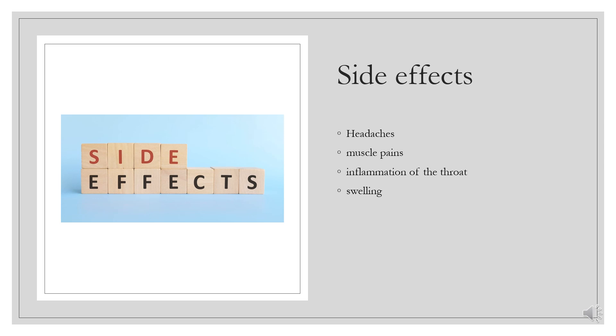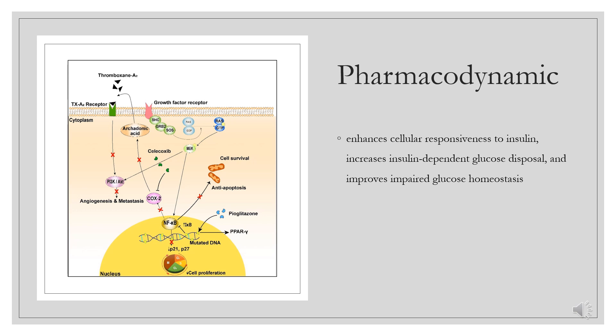It is in the thiazolidinedione (TZD) class and works by improving sensitivity of tissues to insulin. Pyoglitazone enhances cellular responsiveness to insulin, increases insulin-dependent glucose disposal, and improves impaired glucose homeostasis. In patients with type 2 diabetes mellitus, these effects result in lower plasma glucose concentrations, lower plasma insulin concentrations, and lower HbA1c values. Significant fluid retention leading to the development or exacerbation of congestive heart failure has been reported with pyoglitazone; avoid its use in patients with heart failure or at risk of developing heart failure. There is some evidence that pyoglitazone may be associated with an increased risk of developing bladder cancer. Pyoglitazone should not be used in patients with active bladder cancer and should be used with caution in patients with a history of bladder cancer.